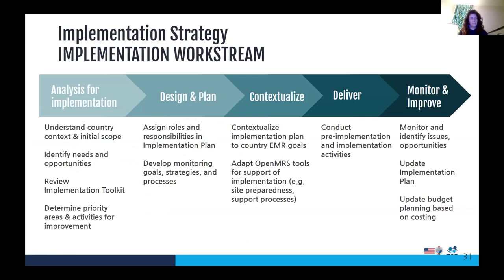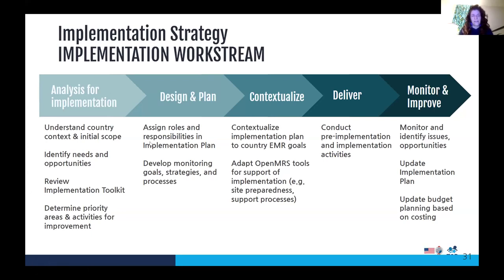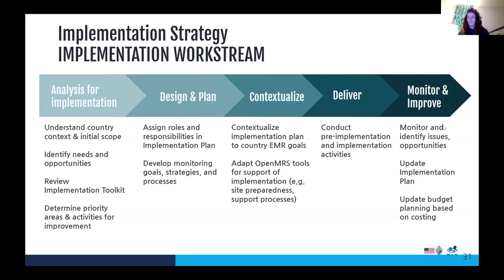The implementation strategy work stream goes like this: first there's analysis for implementation, then you design and plan, then you contextualize the toolkit, deliver it, and monitor and improve it. The first big step is understanding the context, identifying the needs, reviewing the toolkit itself, and determining priorities and activities for improvement. Then you assign roles and responsibilities and develop monitoring goals and strategies in the design and plan phase. Then it works to contextualize implementation plans to the country's EMR goals, adapting the tools in support of implementation, conducting pre-implementation and implementation activities, and then monitoring and improving.